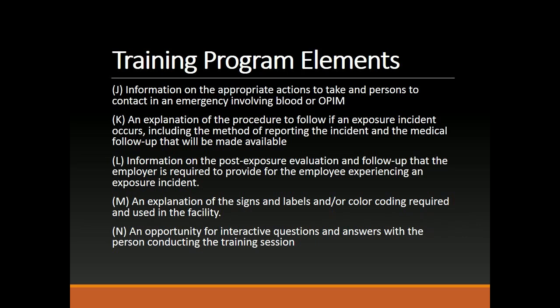Further training elements include: information on the appropriate actions to take and persons to contact in an emergency involving blood or a PIM; an explanation of the procedure to follow if an exposure incident occurs, including the method of reporting the incident and the medical follow-up that will be made available; information on the post-exposure evaluation and follow-up that the employer is required to provide for the employee experiencing an exposure incident; and an explanation of the signs, labels, and color coding required and used in the facility. Training must also include an opportunity for interactive questions and answers with the person conducting the training session.